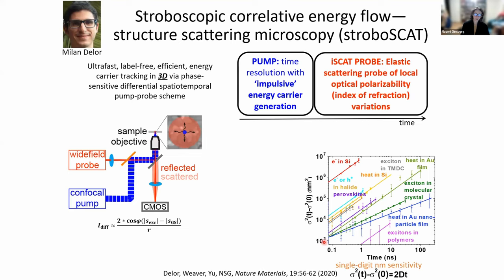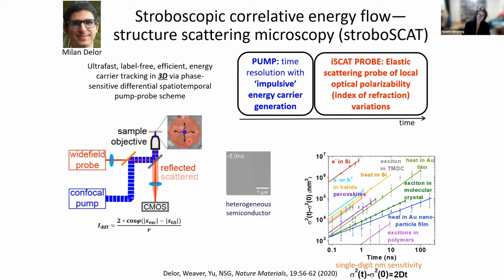This is basically a log-log plot of the mean squared expansion of the initially generated photoexcitation spot as a function of time over many decades. In a matter of about 10 minutes, it's possible to achieve single-digit nanometer sensitivity to changes in the size of this evolving distribution. We have dark contrast and light contrast relative to a gray background — that's the interferometric aspect of the technique, which ends up being extremely valuable to us.